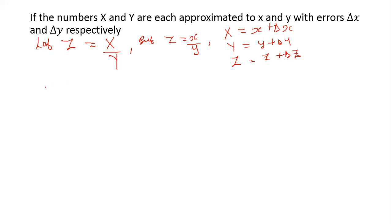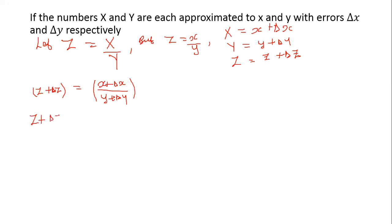What we are going to do here is write z plus delta z equal to x plus delta x over y plus delta y. So we have z plus delta z equals x plus delta x divided by y plus delta y.